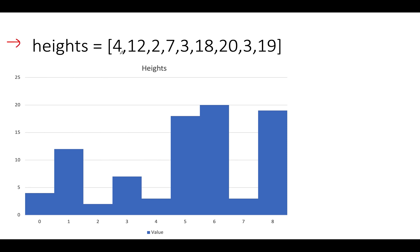The height array given to us is: 4, 12, 2, 7, 3, 18, 20, 3, 90. The number of bricks available is 10 and the number of ladders available is 2.